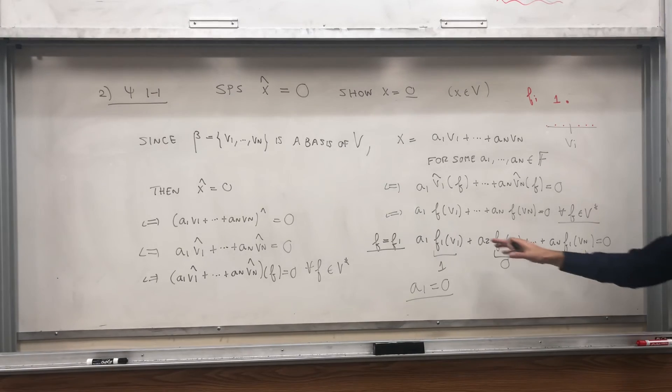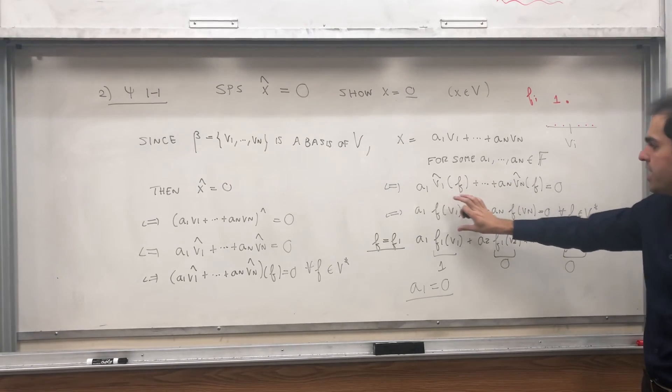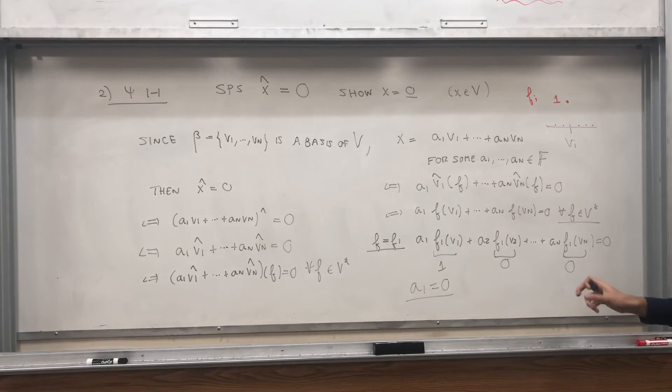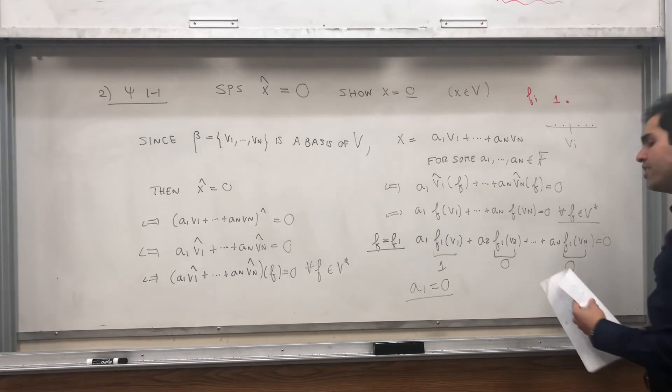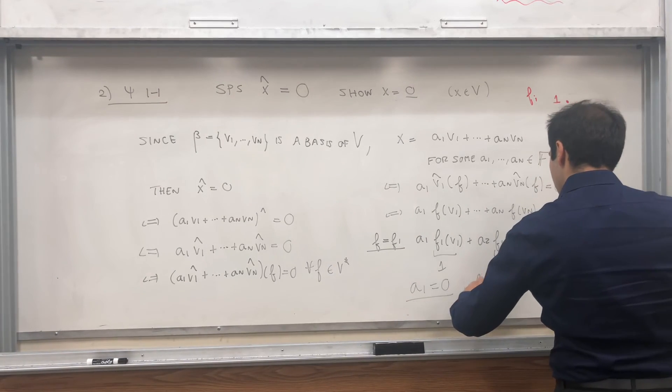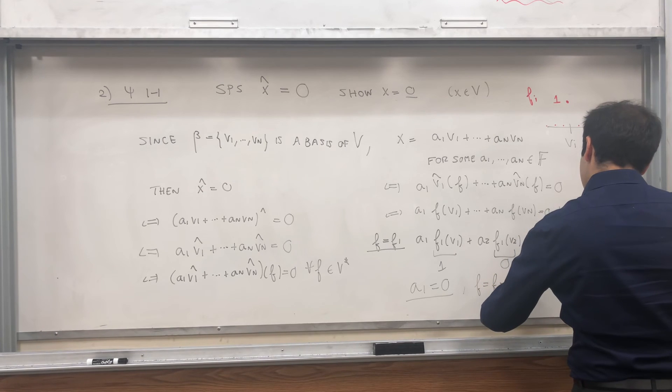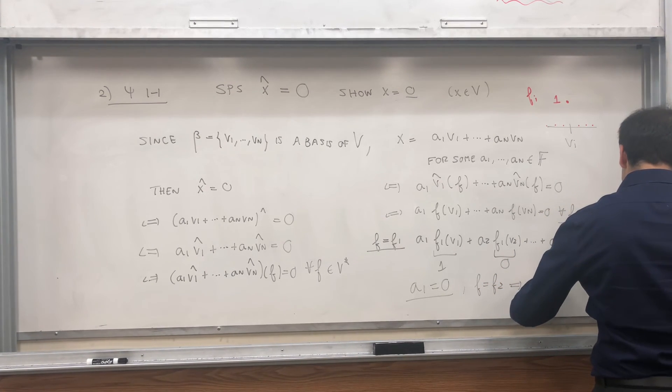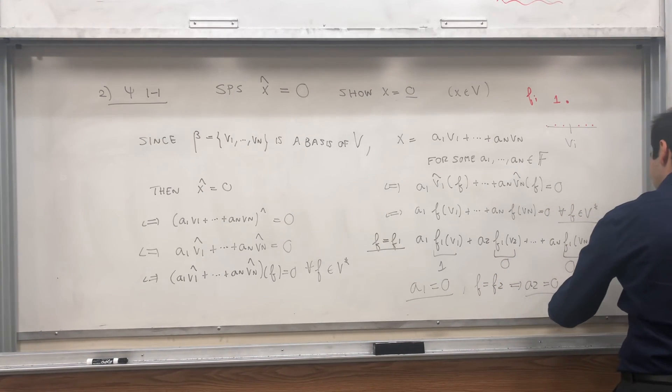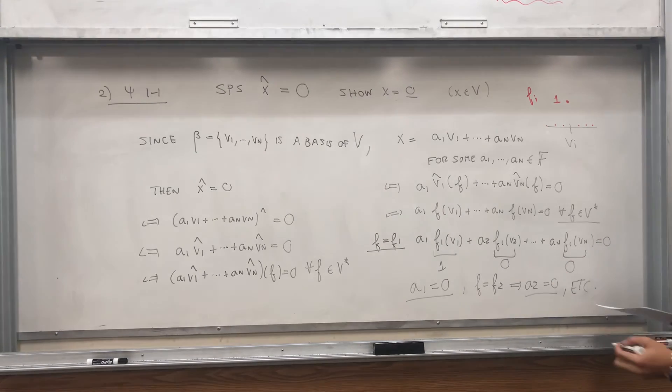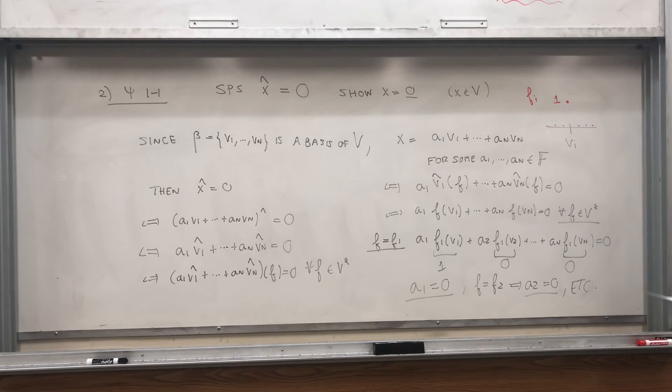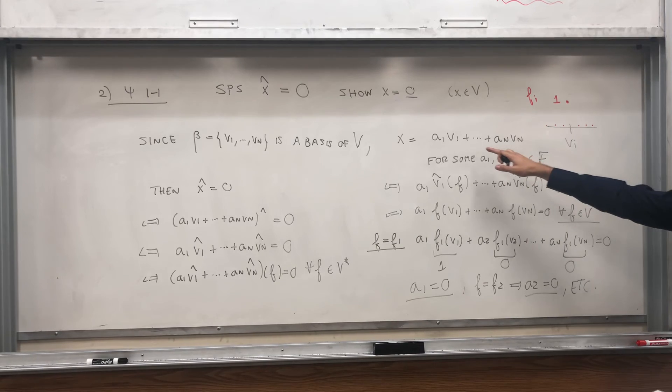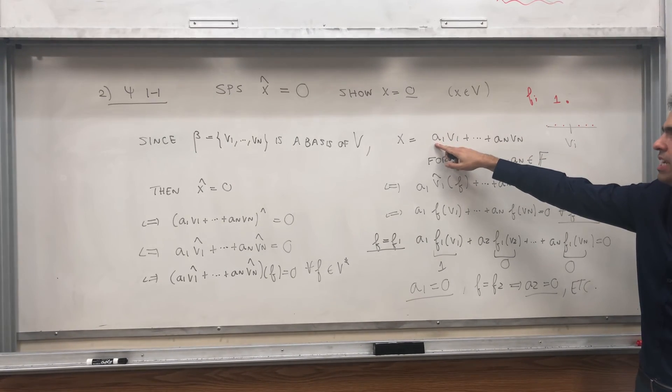Then we get a1 f1 at v1 plus a2 f1 at v2 plus dot dot dot plus an f1 at vn equals zero. But again, by definition of f1, this is one here, this is zero here. Everything else is zero, so a1 equals zero. And similarly, if you use f2, you get zero, one, zero, zero, zero. So then a2 equals zero. Et cetera, et cetera. So eventually what you get is that all the ai's are zero, but then what does that mean?